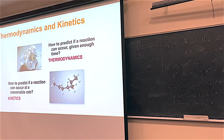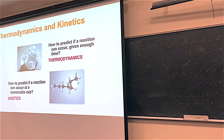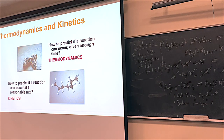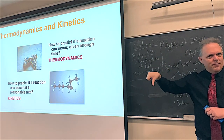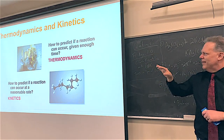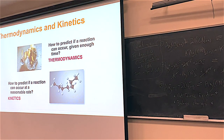A quick review: since Chem 222 and maybe a little in 221, we've talked about the interplay between thermodynamics and kinetics. We're going to talk about enthalpy again and entropy — that's thermodynamics. Thermodynamics is all about reactions that either get the thumbs up — they're going to happen — or a thumbs down — they're not going to happen. It's a yes or no applied to things.